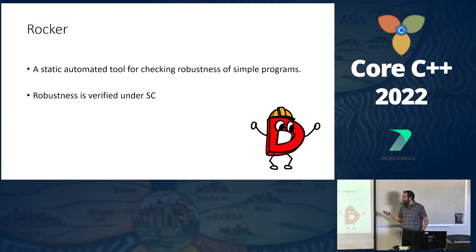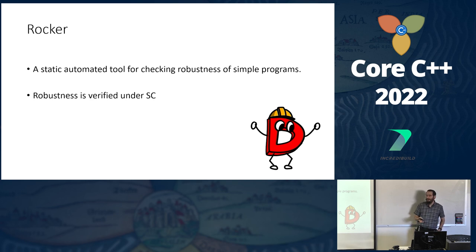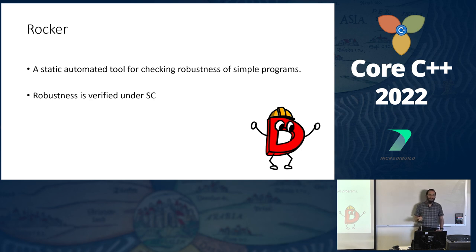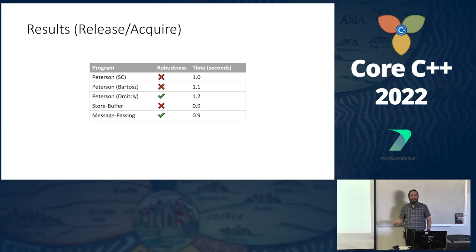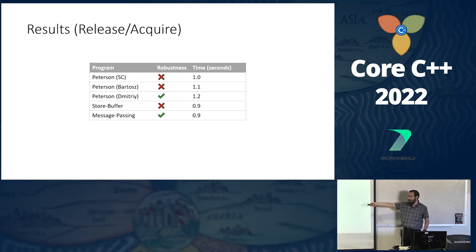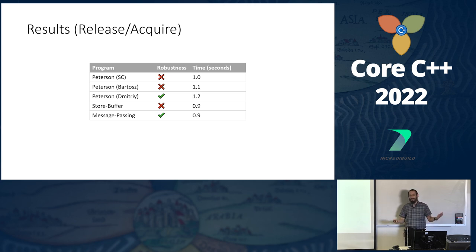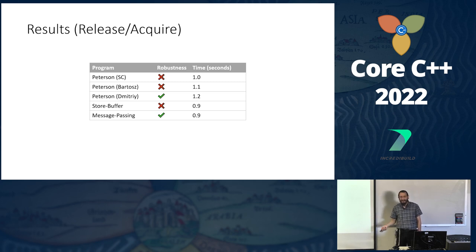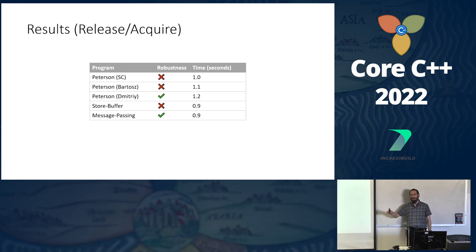We built a tool called Rocker that automatically and statically establishes the robustness of programs written in a TPL toy programming language capturing C11 semantics. Robustness is verified under sequential consistency — we don't actually need the weak hardware to find the issues. Under release-acquire: Peterson's lock is broken, Bartosz's implementation is broken, but Dmitry's implementation is correct. The store buffer isn't robust but message passing under release-acquire is. We found all these results without manually reasoning about the programs — it takes about two seconds.